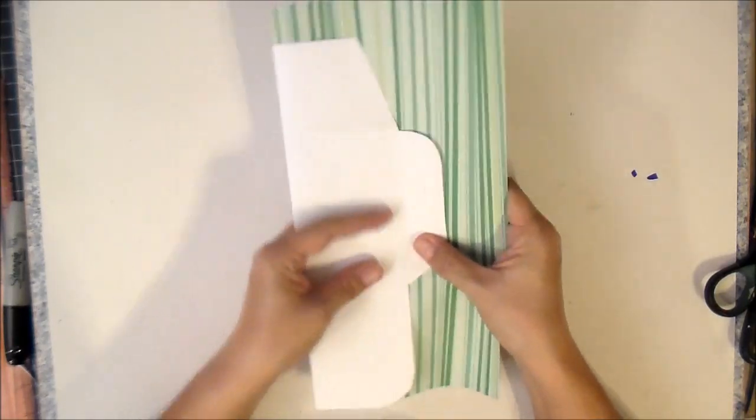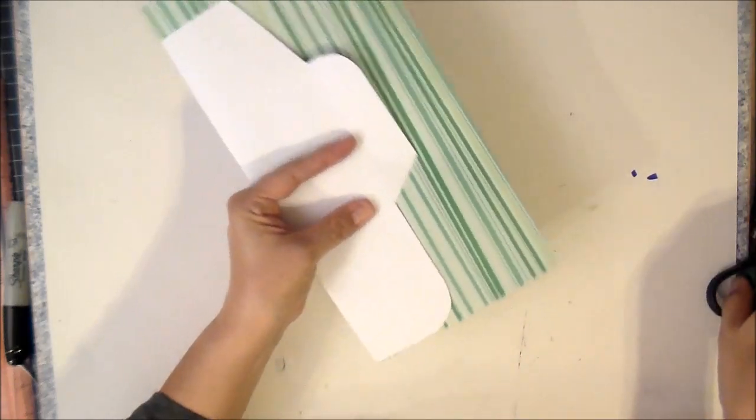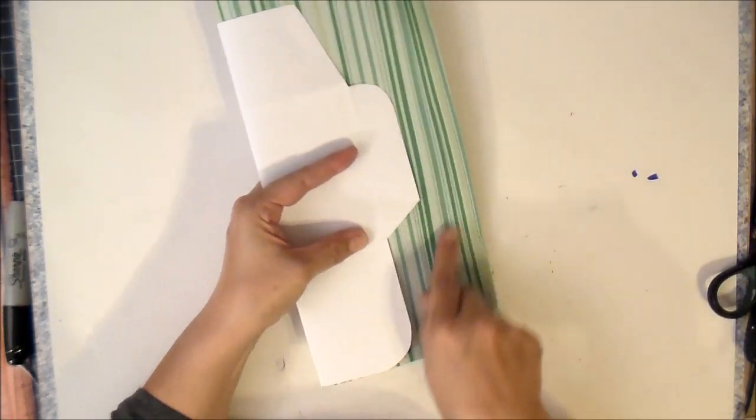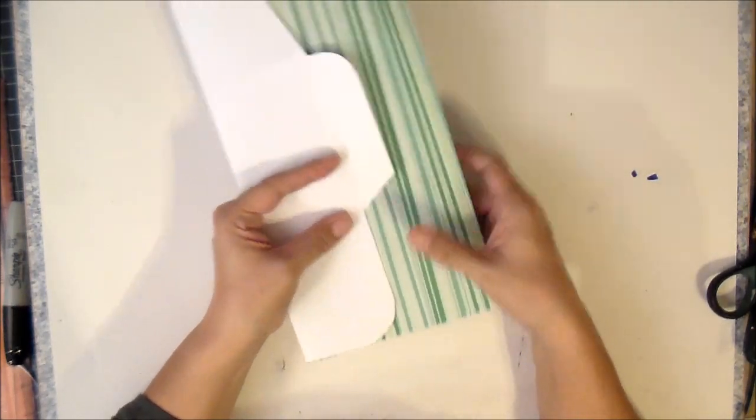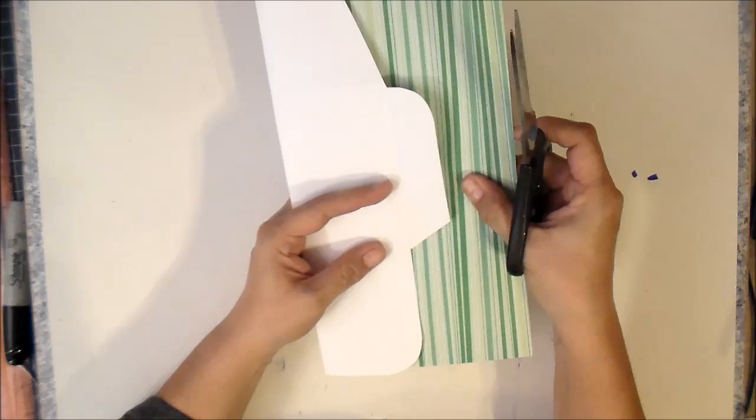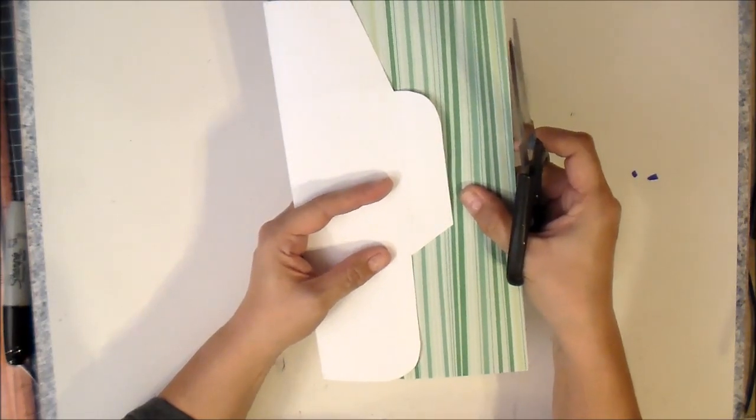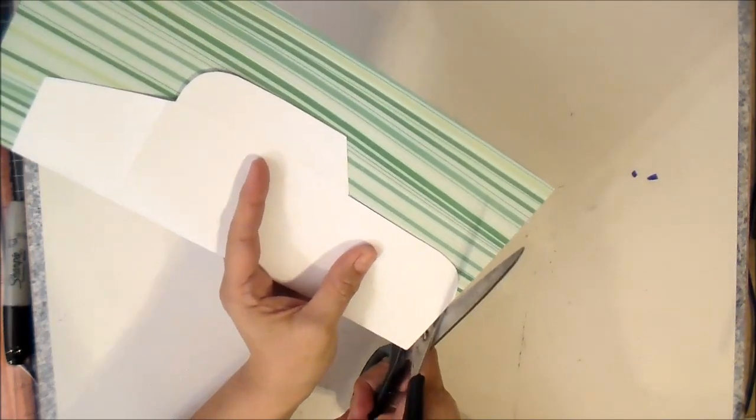Line it up really good, and then you can either trace it and cut it out, or you can do this. Just hold it. Make sure that it's in there nice and good, and just cut.